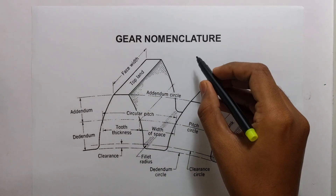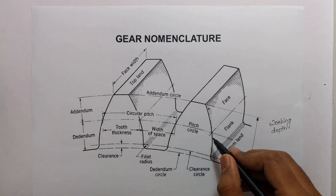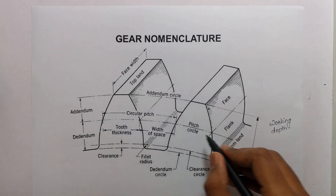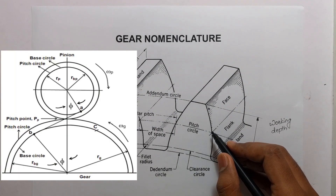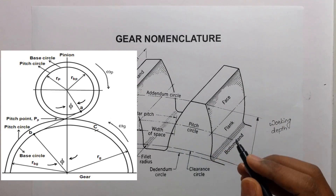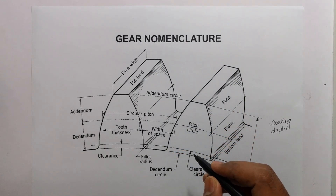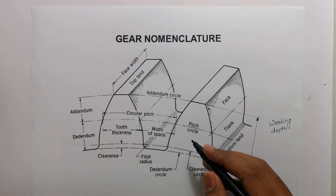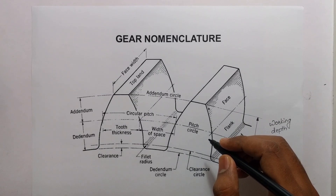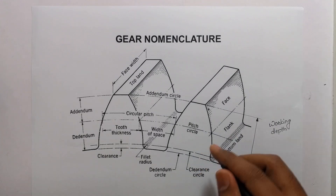The first term is pitch circle. This is an imaginary circle which, by pure rolling action, would give the same motion as the actual gear. Then pitch circle diameter — it is the diameter of the pitch circle, and the size of the gear is usually specified by the pitch circle diameter.